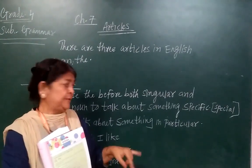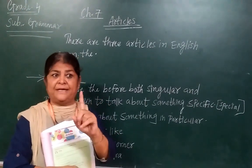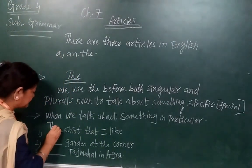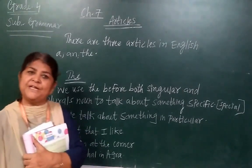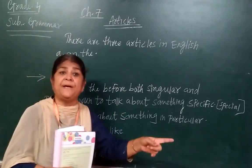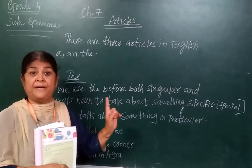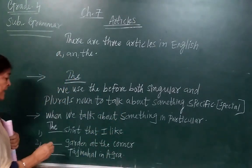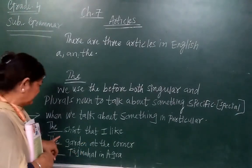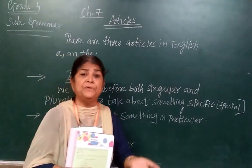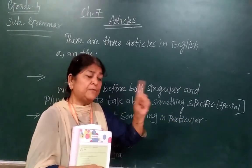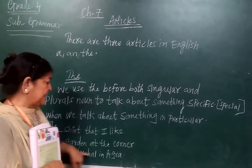That shirt that I like — it is called a particular thing. So what do you write here? 'The.' The shirt that I like. Number two: the garden at the corner. That garden which is at the corner is a particular name, so you write 'The' — the garden at the corner.